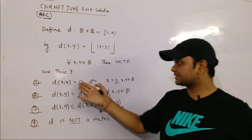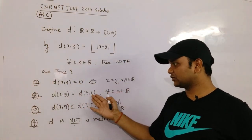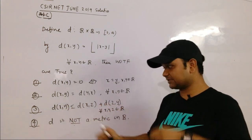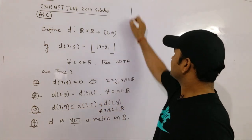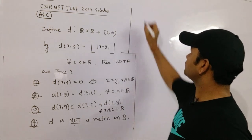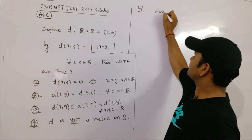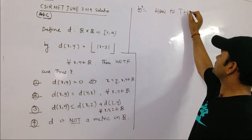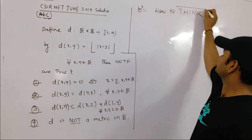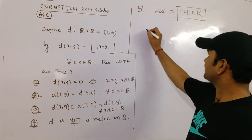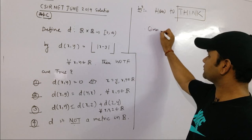Important is how one should approach the question. Let's understand - I always start with how to approach, how to think about this kind of problem. Let's write one by one what is given. First of all, you should know d(x,y) is equal to the greatest integer of |x-y|.